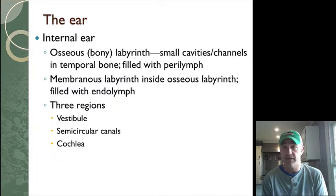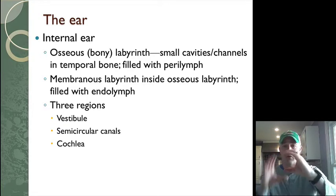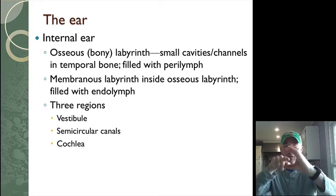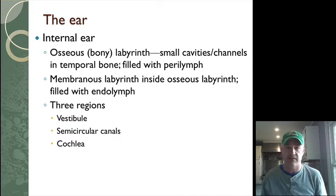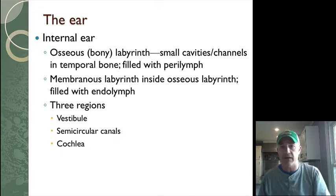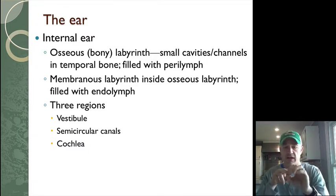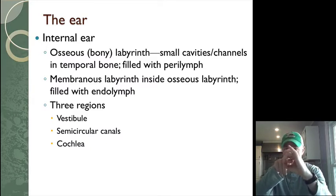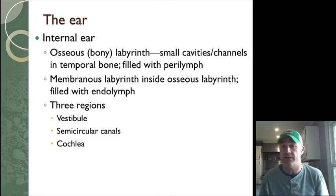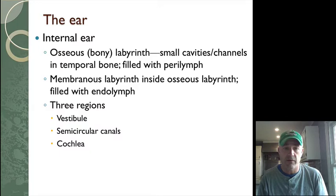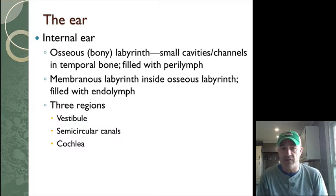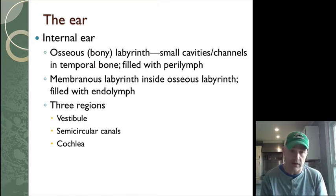In the internal ear, we have these cavities. You have a bony osseous labyrinth filled with perilymph, with a membranous tube traveling through the middle of it filled with endolymph. We can talk about this inner ear in three main regions: the vestibule, the semicircular canals, and the cochlea.